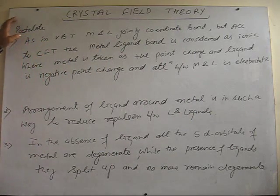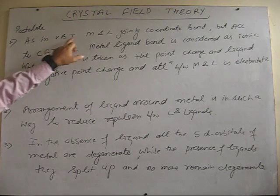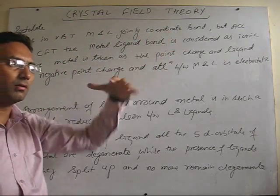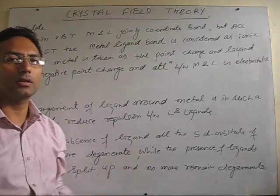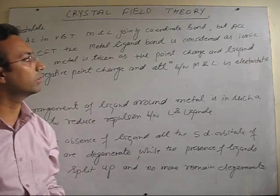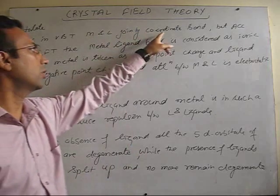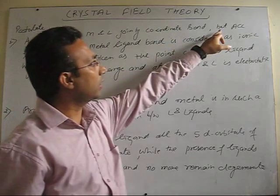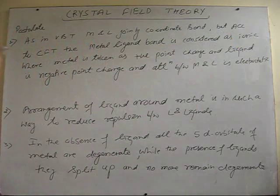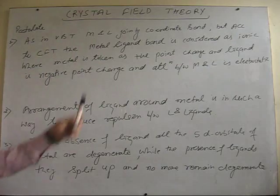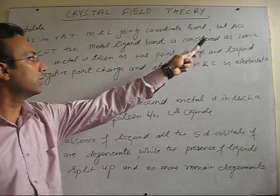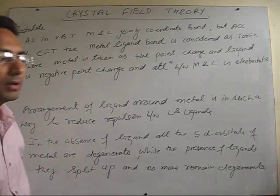Here are some important postulates of this theory. As in VBT, metal-ligand bonding is considered as a pure coordinate bond, in which metal vacates certain orbitals and ligand donates their lone pairs into that, so the bonding is purely coordinate — a purely covalent bond is formed. But in case of crystal field theory, it assumes that metal and ligand are considered as forming an ionic bond.